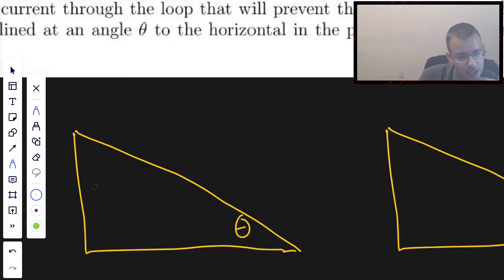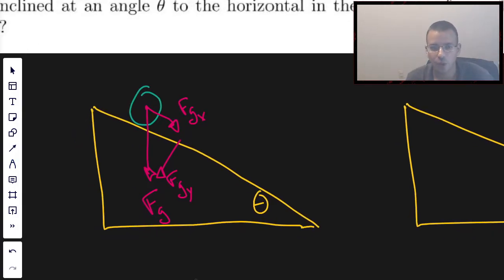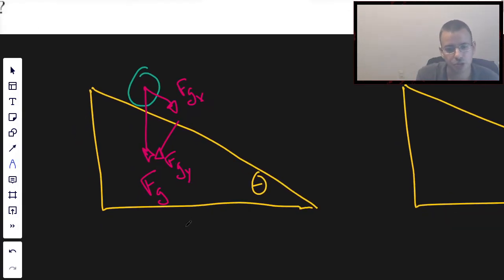We have gravity here and it's going to pull down on this. So we're going to have force gravity pulling down. Now we can break up this gravitational component into FGX and FGY.